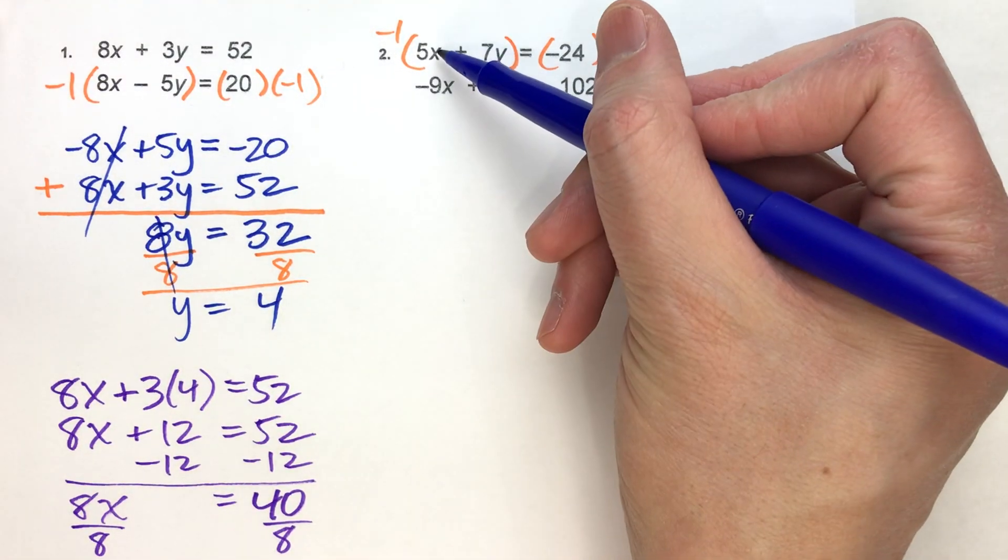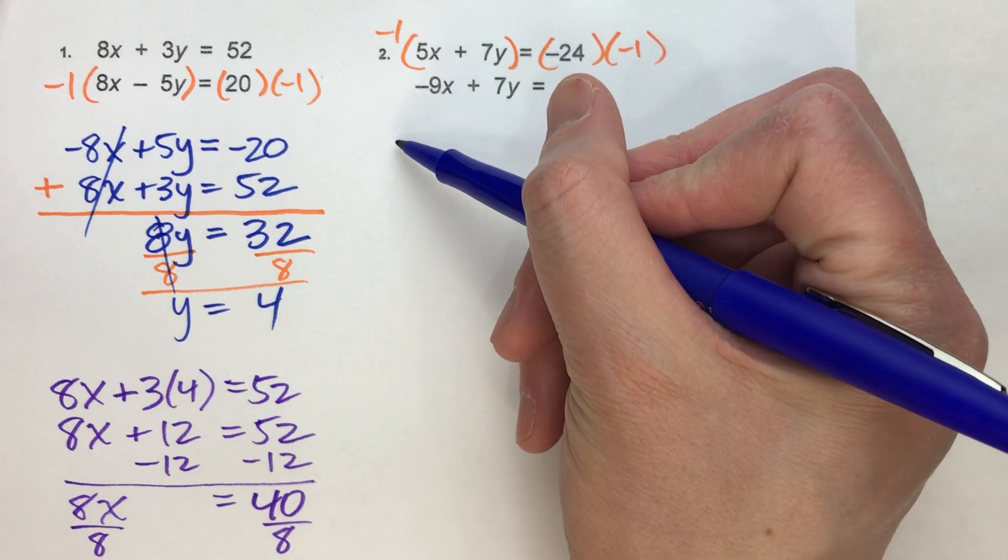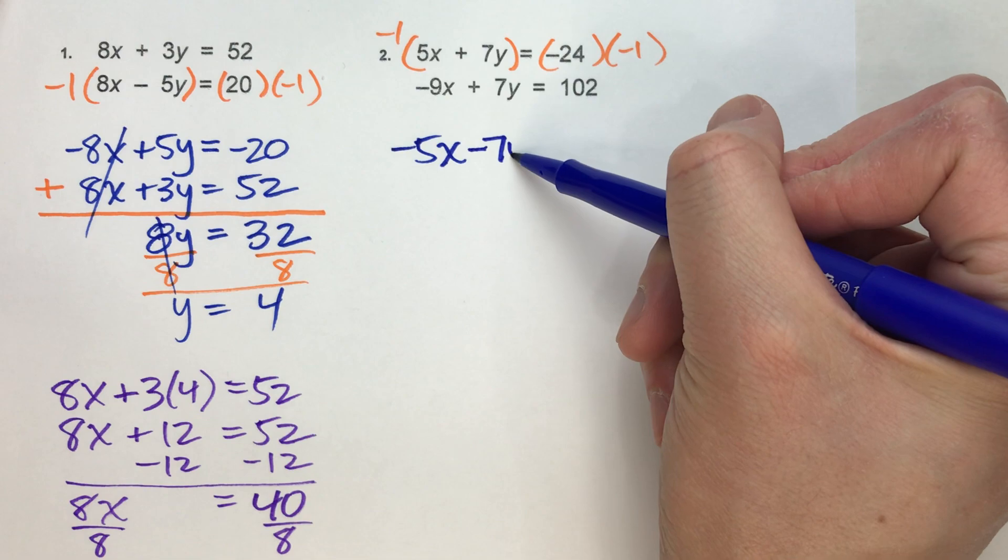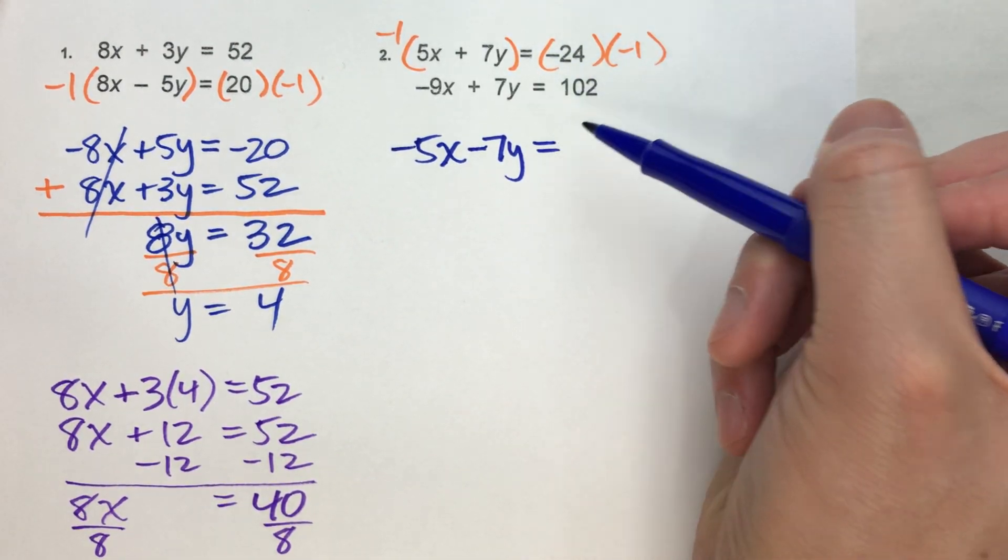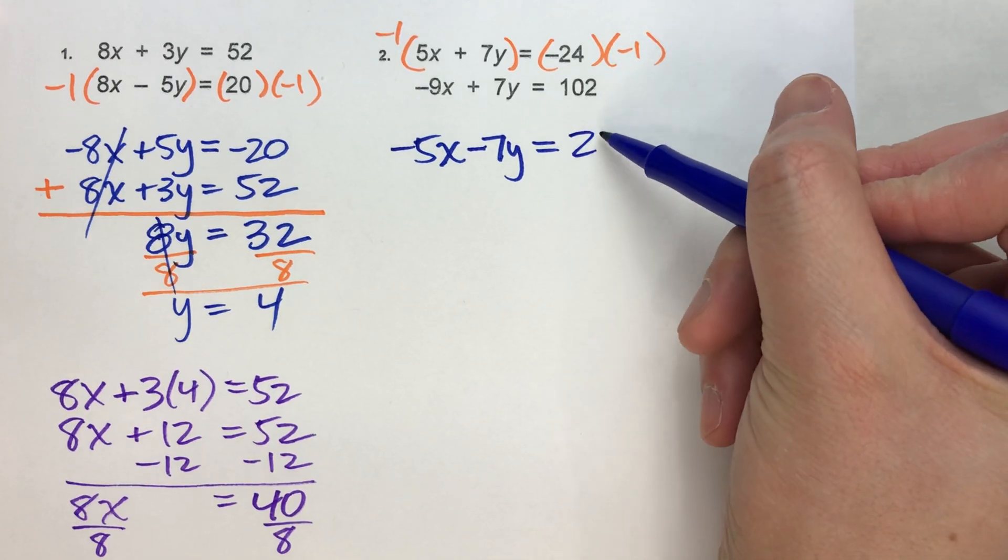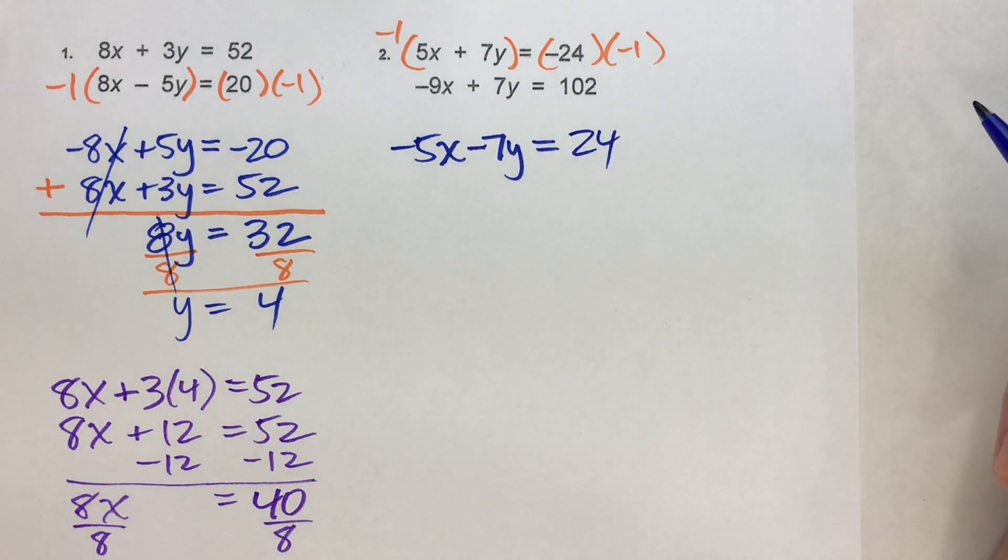When I do that, this becomes negative 1 times 5x. -5x. Negative 1 times positive 7y. -7y. Drop down my equals. And on the other side, -24 times -1 is positive 24.